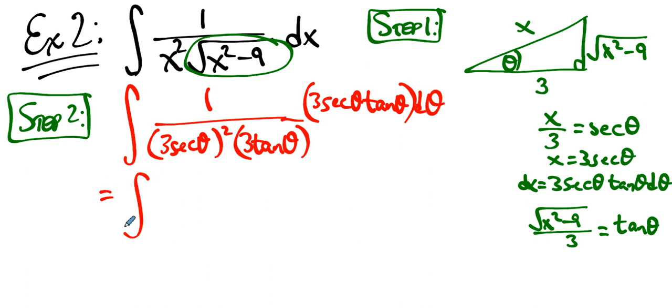So when all the dust settles, there's a tangent canceling out with a tangent. There's a three canceling out with a three. There's a secant canceling out with one of those. But three squared is still left. And this secant only cancels out with one of those. You get one over secant.